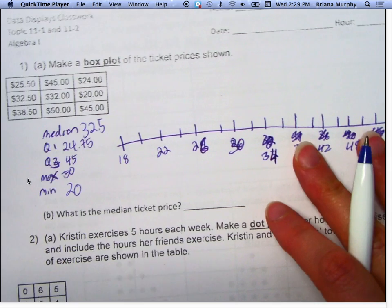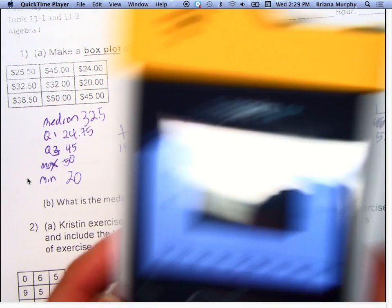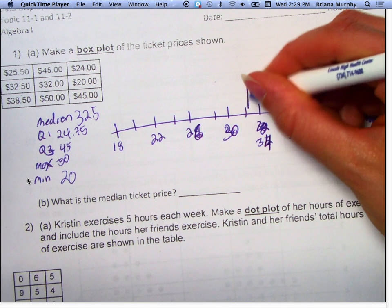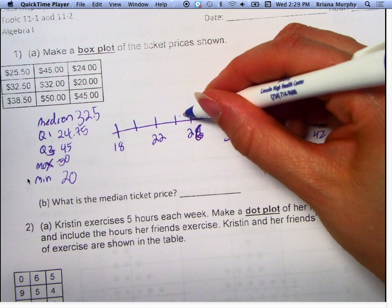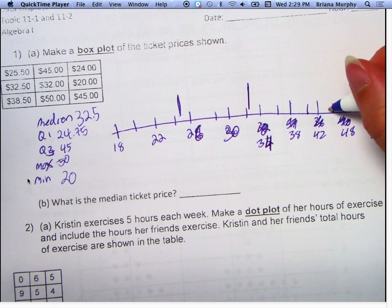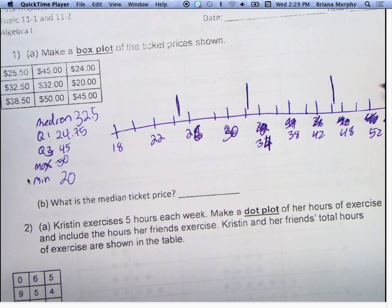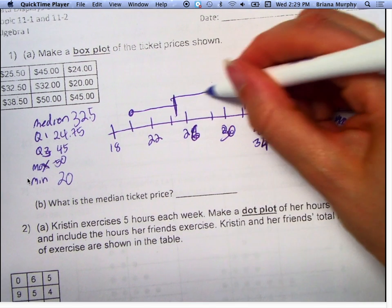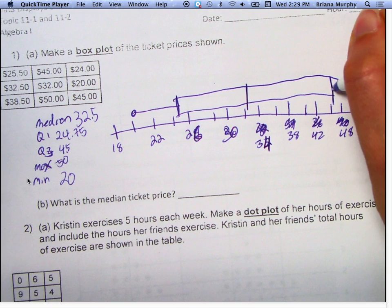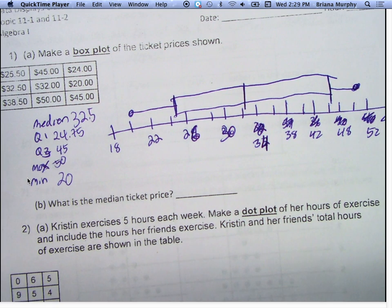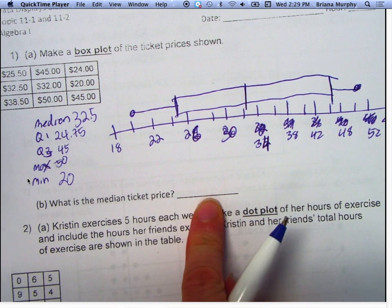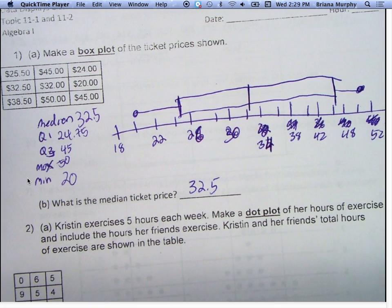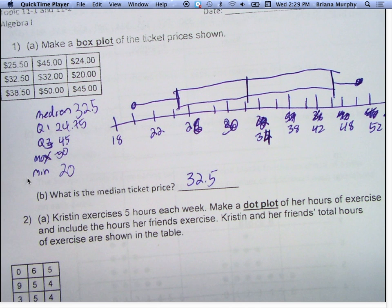I hit control doc. So this makes my life easier because then I just go to 32.5, 24.75, 45, 50, 20 and mark them. And it asks what the median is, we already know it's 32.5. So you can totally do all of these things by hand, but if you have a graphing calculator, I will let you use it.